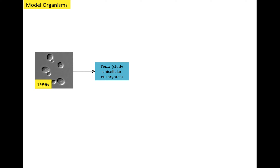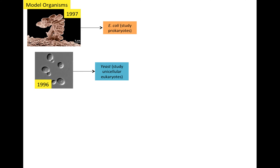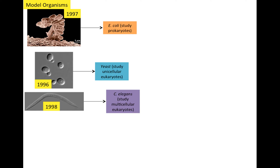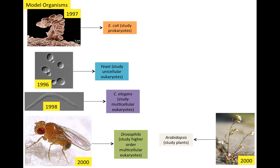So this is where model organisms come in. They allow us to perturb different genetic systems to observe the effects, so they allow us to experiment on them. They've been in use a really long time, but in 1996 the first model organism genome was sequenced — yeast — which allows us to study unicellular eukaryotes. This was followed up by E. coli in 1997 and C. elegans in 1998.